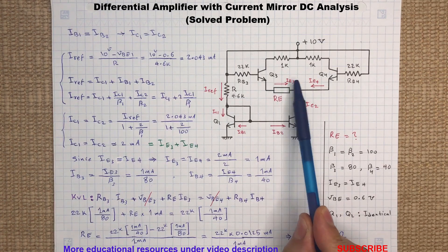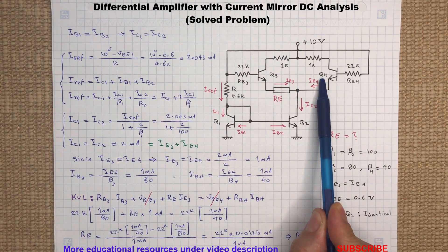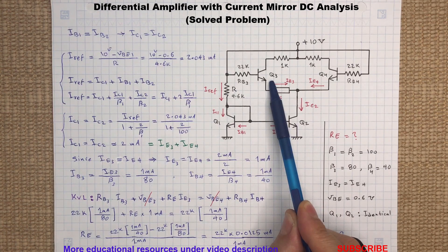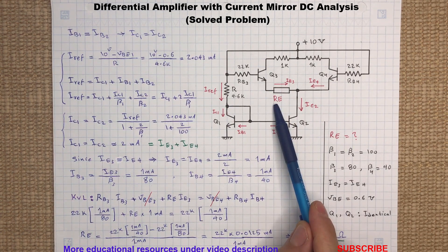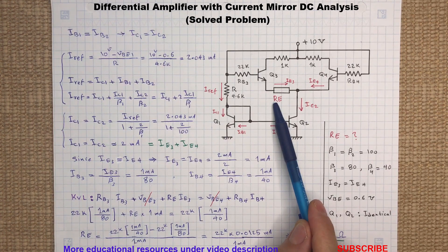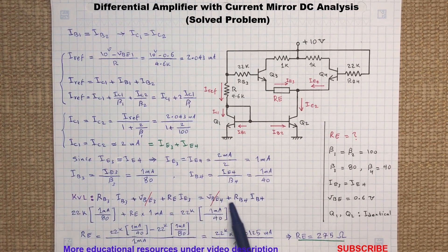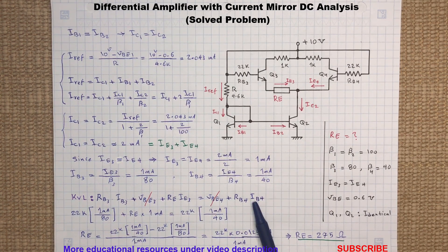The transistors Q3 and Q4 are configured as a differential pair, which in most designs consists of two matched transistors with equal emitter currents. However, in this example, transistor Q3 has twice the current gain beta of transistor Q4. Therefore, to obtain a balanced and equal current at the emitter of Q3 and Q4, we can add a resistor in series with the emitter of transistor Q3. To determine the value of this resistor, we can simply write a KVL equation around a closed loop here.